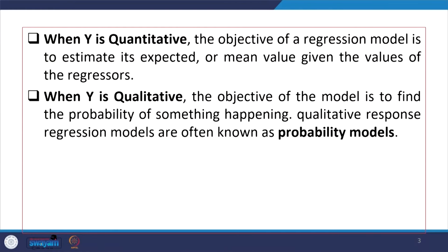When the dependent variable is quantitative, the objective of a regression model is to estimate its expected or mean value given the values of the regressors. When the dependent variable y is qualitative, the objective of the model is to find the probability of something happening. Qualitative response regression models are often known as probability models.